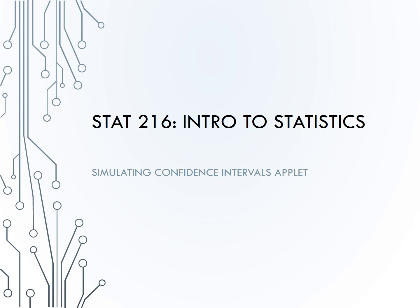This video is to help us understand the Simulating Confidence Intervals applet, which is part of Exploration 3.4b. The larger picture of this applet is to understand what confidence level means — when we say we are 95% confident in an interval, where does that confidence level come from?